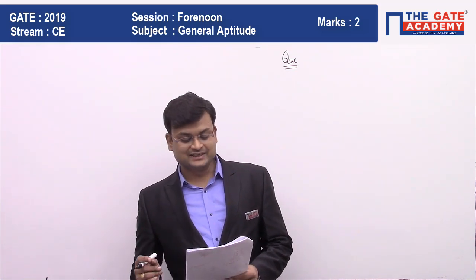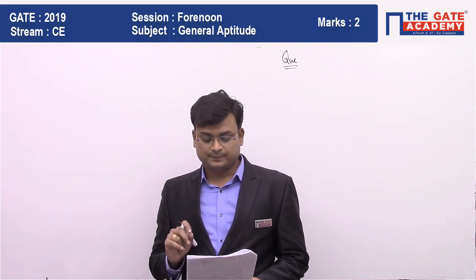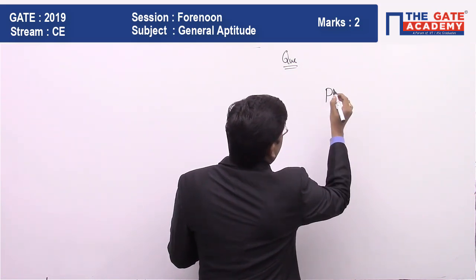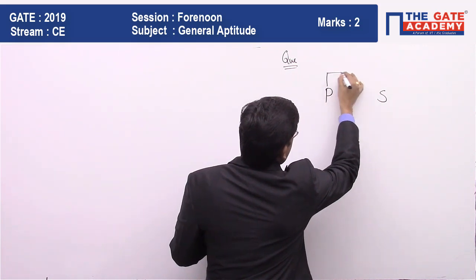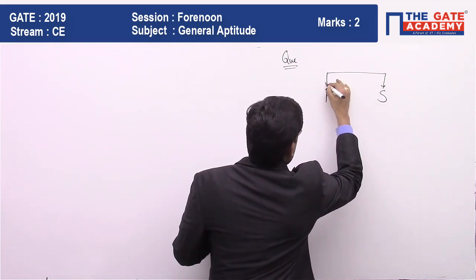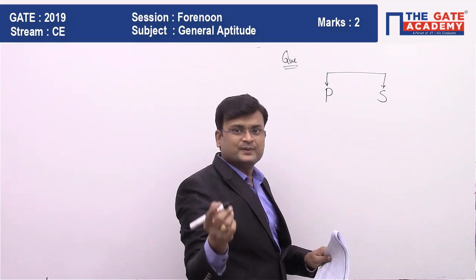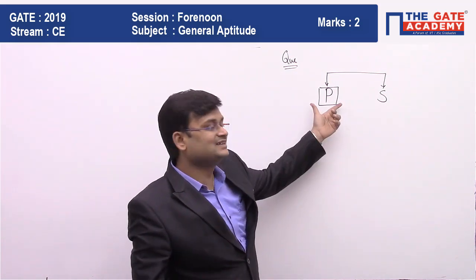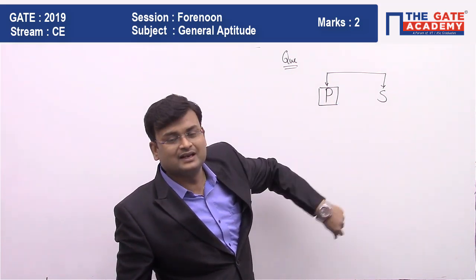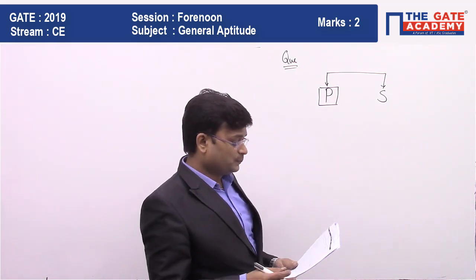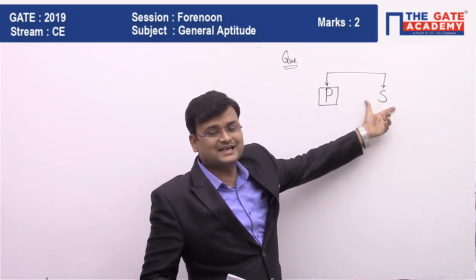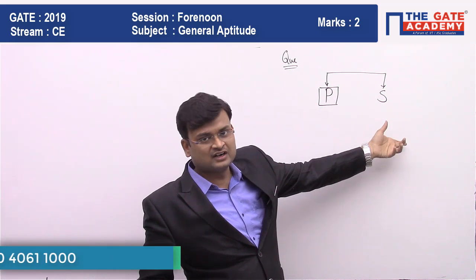Let me read the question for you. P, Q, R, S, and T are members of the same family. P is the brother of S. So let's start making the diagram. P is here, S is here — both are siblings. Since the gender of P is already given, we put P in a square box for male gender, and for female we put a circle.